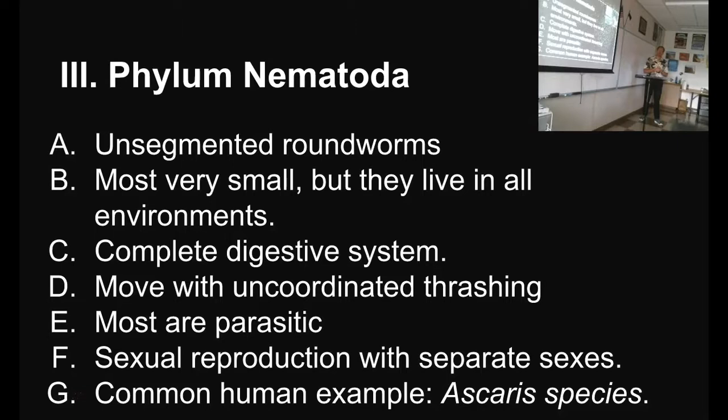The nematodes don't have a very coordinated musculature system, so they move with uncoordinated thrashing. If it's not where it wants to be, it basically has a seizure until it is somewhere else. They can't inchworm themselves along because they don't have any segments — so when one part of them squeezes, the whole worm gets stiffer but doesn't necessarily go anywhere.